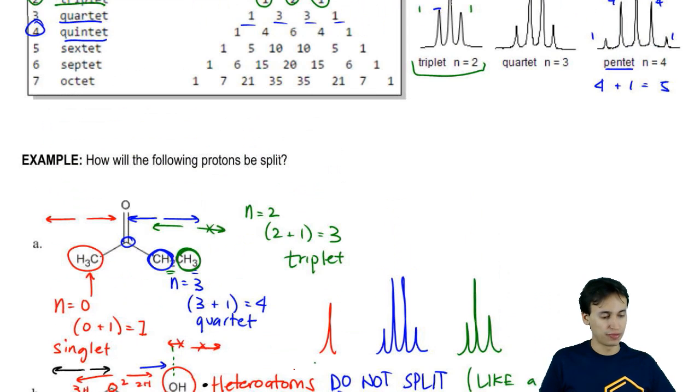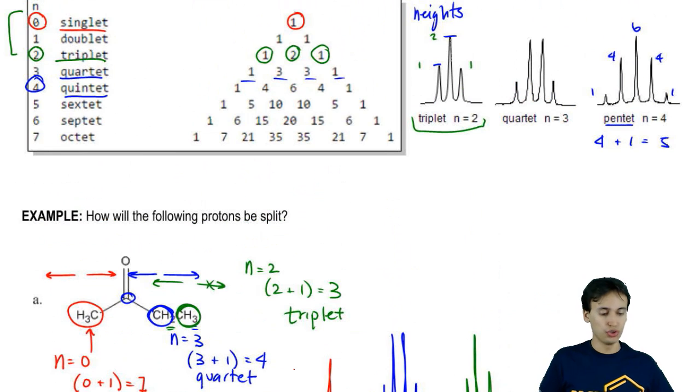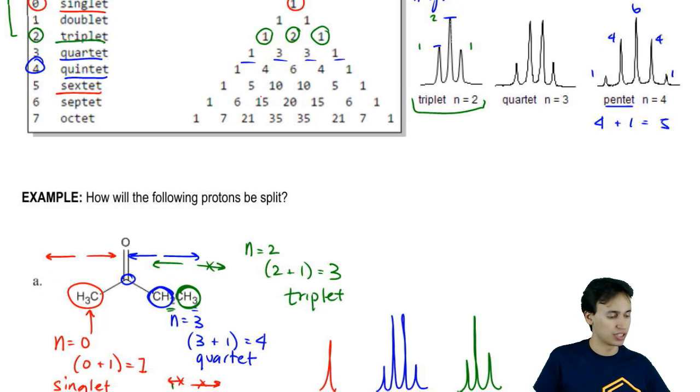Since that's one we haven't drawn yet, just to show you, you could predict what a sextet would look like by Pascal's triangle. It would be a 1, 5, 10, 10, 5, 1 split.